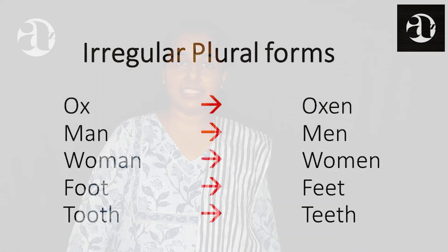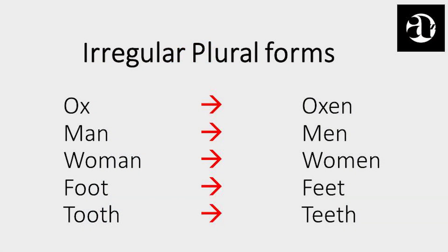Most of us are aware that the plural form of child is children, ox is oxen, man is men, woman is women, foot is feet, tooth is teeth.